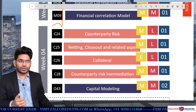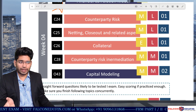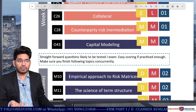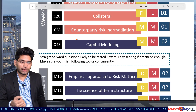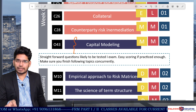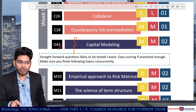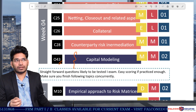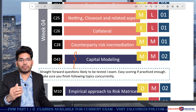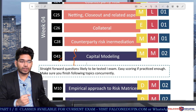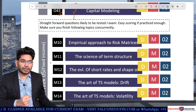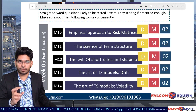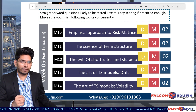Then we have credit risk topics on counterparty risk, close-out netting, collateral, counterparty risk intermediation. Capital modeling is from operational risk and is a very important topic. Note that the standard approach (chapter 44) has been deleted from the syllabus for 2019, while chapter 43 remains. In capital modeling, expect questions that are directly based on concepts, and always be ready to apply mathematical techniques in the exam.